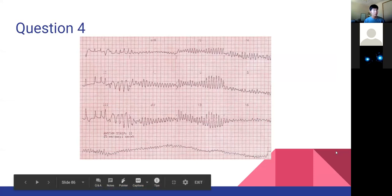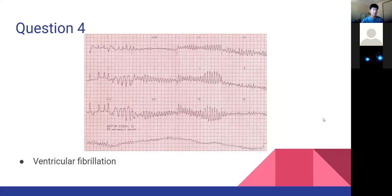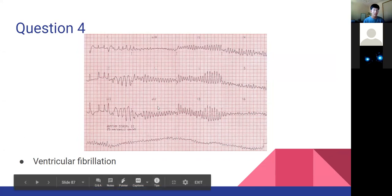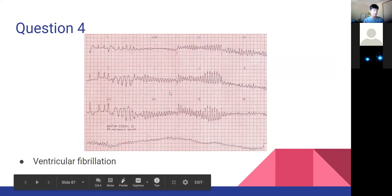The fifth ECG - this is one of the most important to recognize. It's ventricular fibrillation. You can't have blood exiting the heart properly in this situation, so this is a very bad situation requiring immediate action.